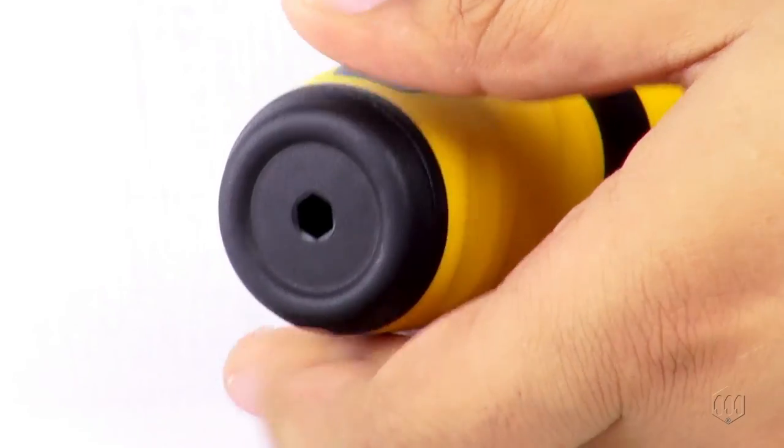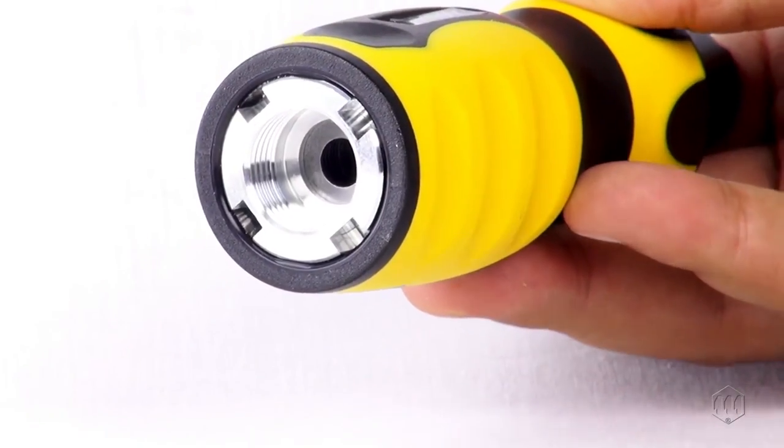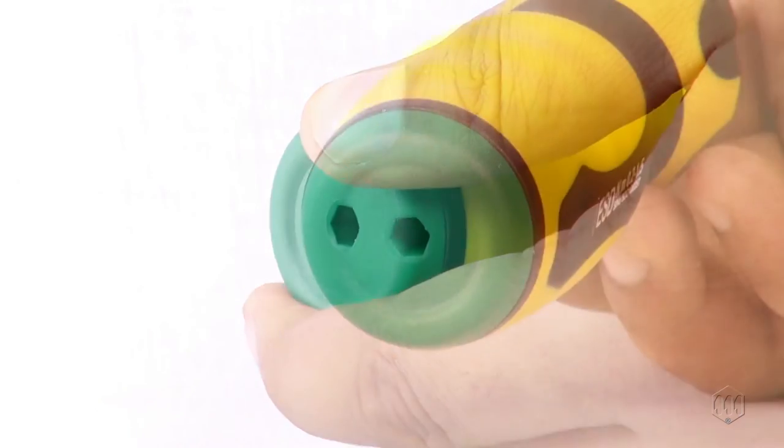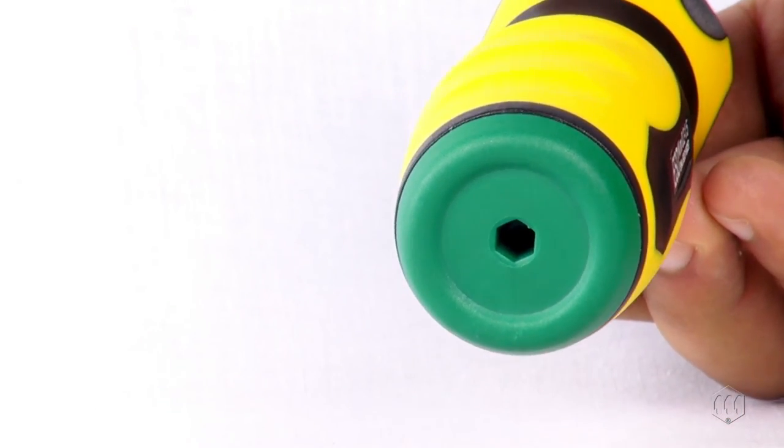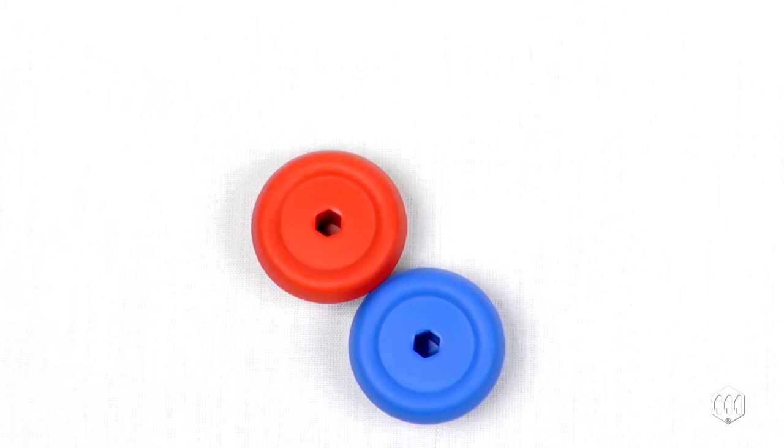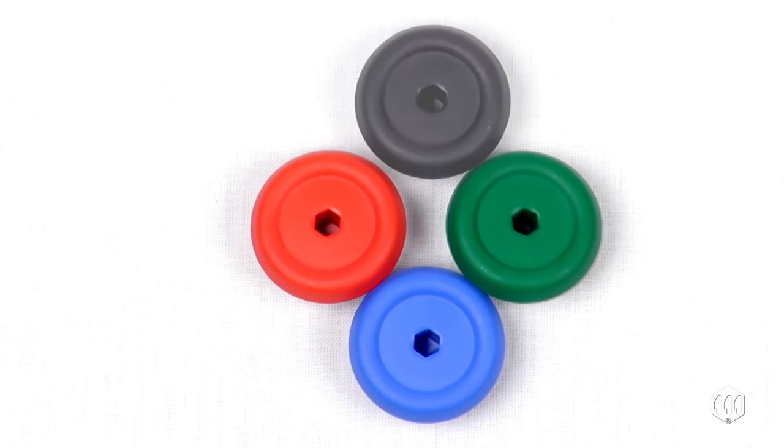If your production has different torque values, change the color cap to color code each tool's torque settings. Mount sells the different color end caps as an accessory. Each pack of four includes blue, red, green, and black.